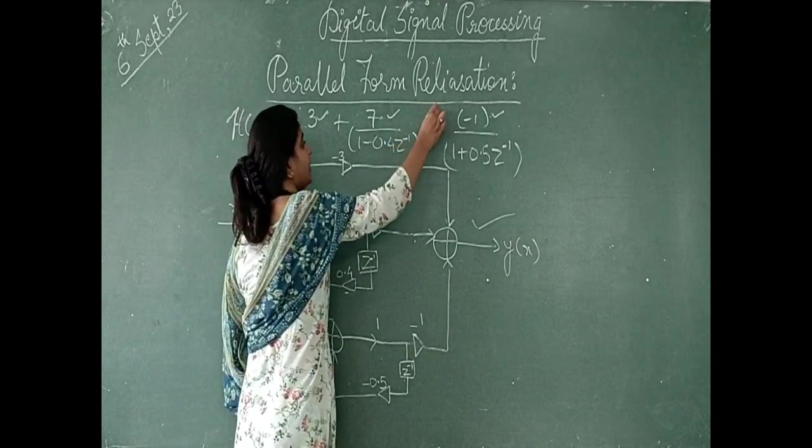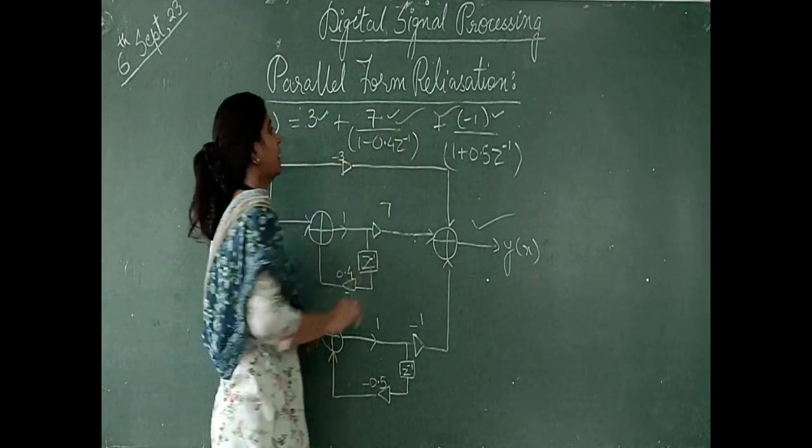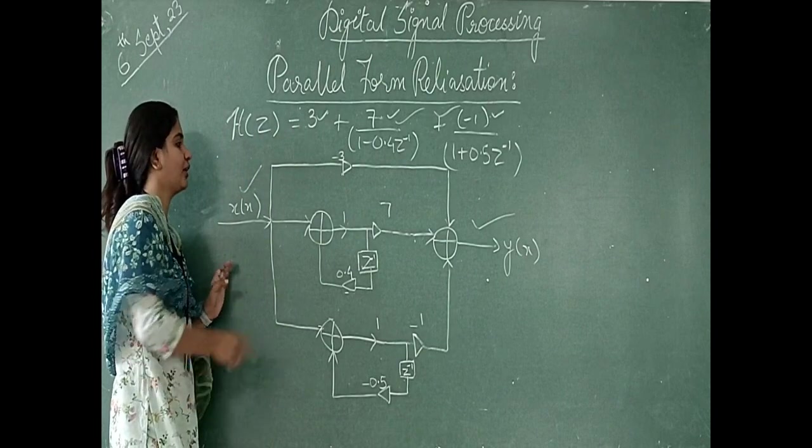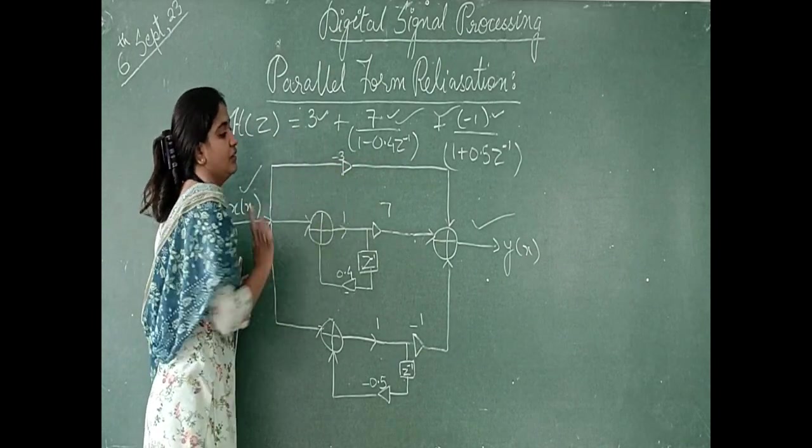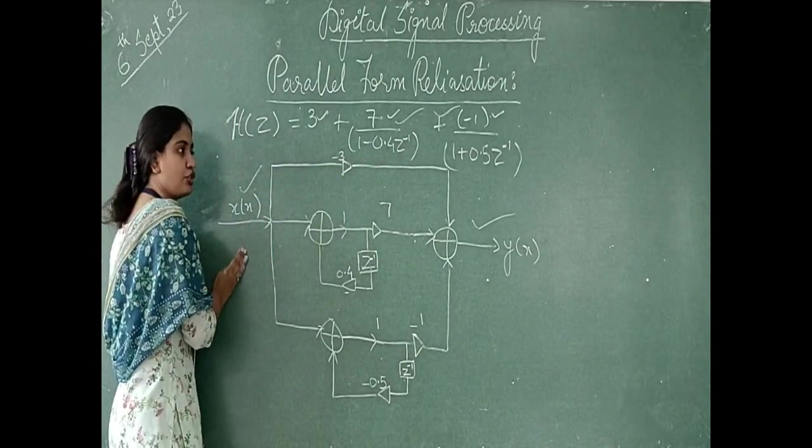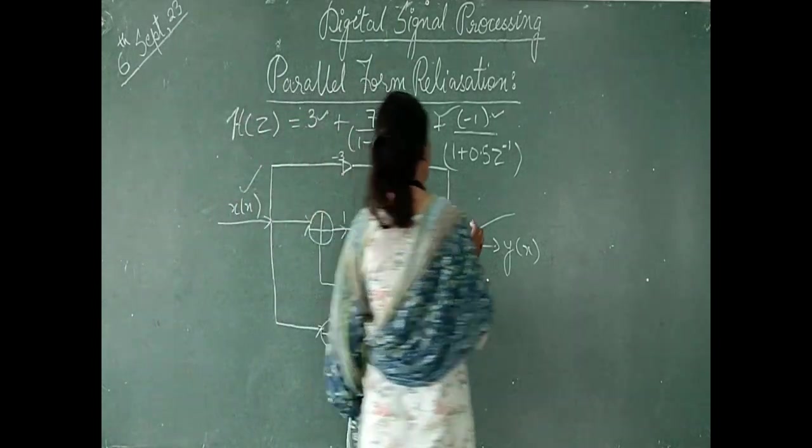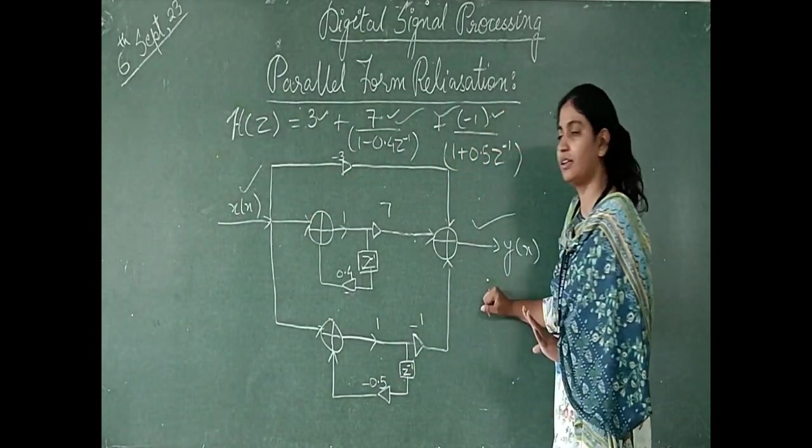One delay element will become, one delay element will become, and this will become a constant. We have made it on top, so your x of n has become and our output has come, y of n. It is clear.